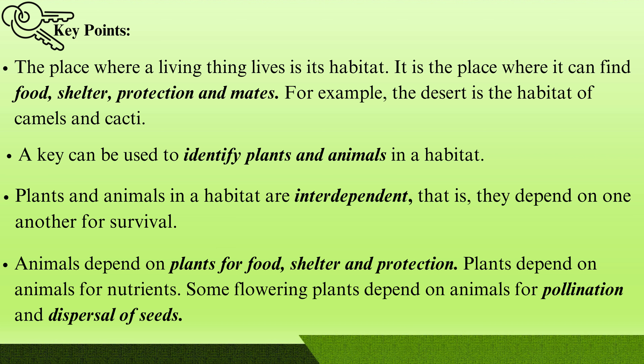Plants and animals in a habitat are interdependent — they depend on one another for survival. Animals depend on plants for food, shelter and protection. Plants depend on animals for nutrients. Some flowering plants depend on animals for pollination and dispersal of seeds.